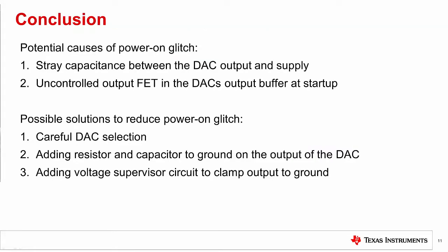Okay, well those are the basics of power-on glitch and methods to remove it. In summary, we show that there are two main causes of power-on glitch. Stray capacitance between the DAC output pin and the supply pin, and the DAC's output buffer having an uncontrolled PMOSFET that allows current to flow between the supply and the output.